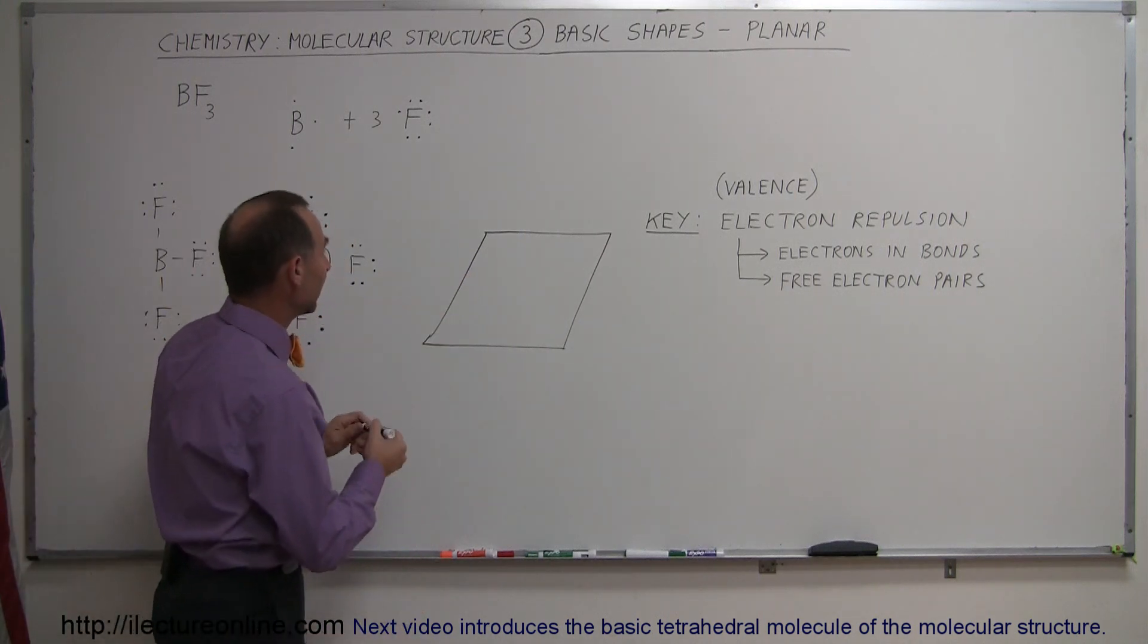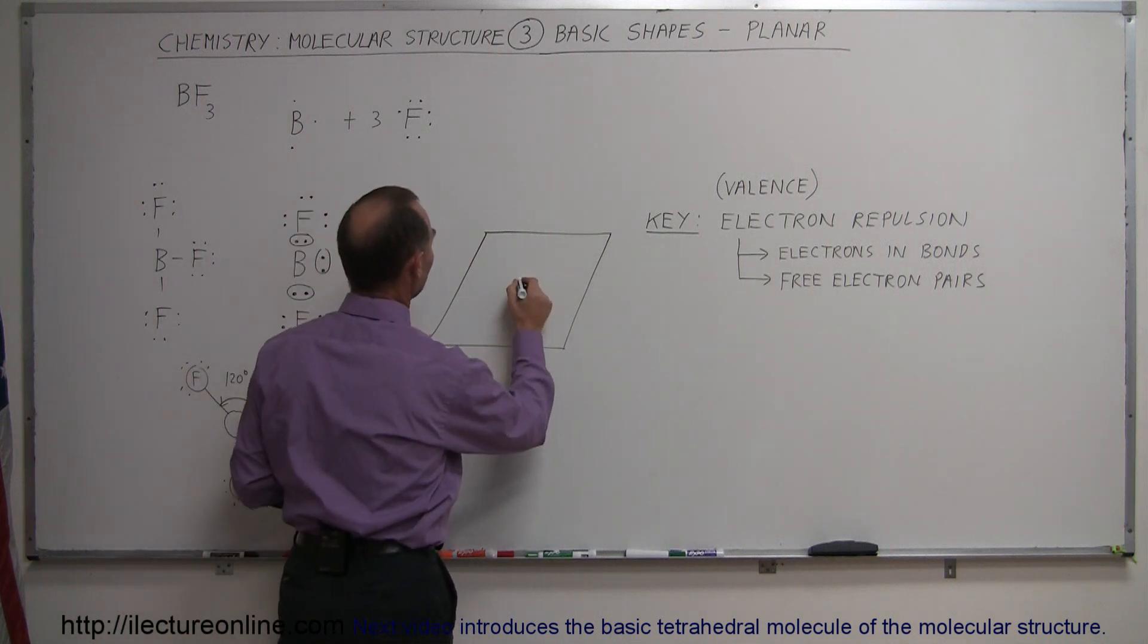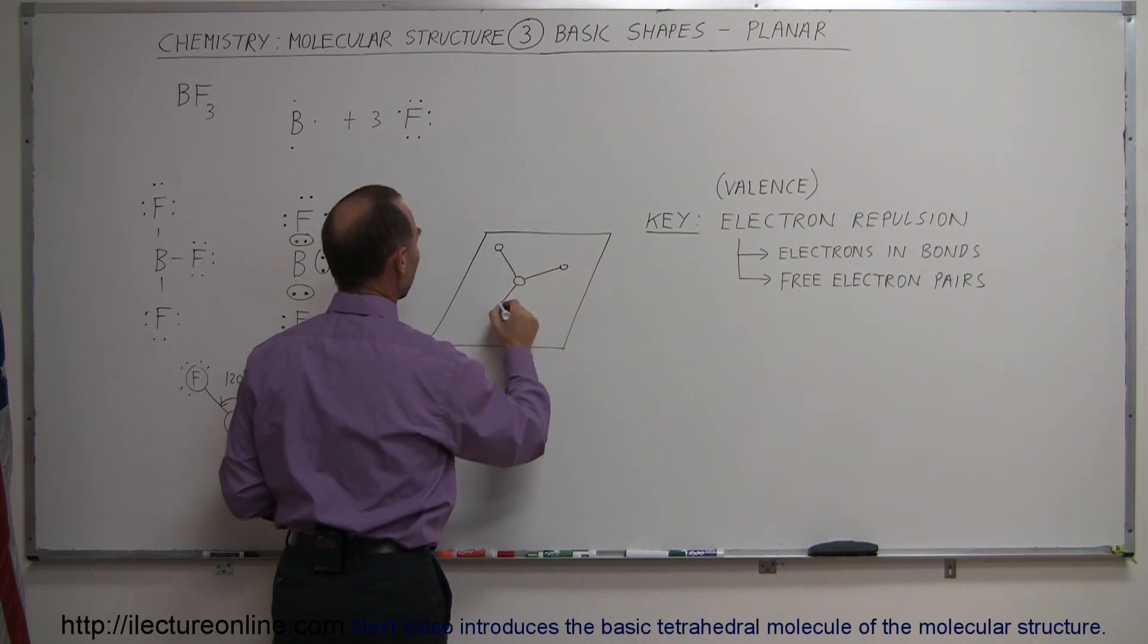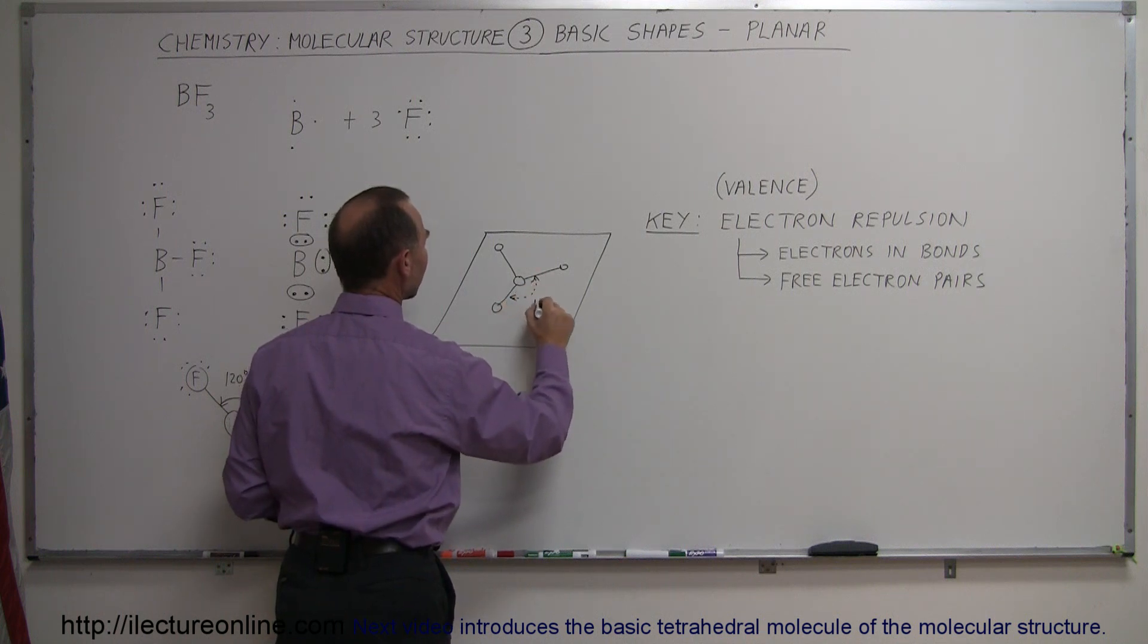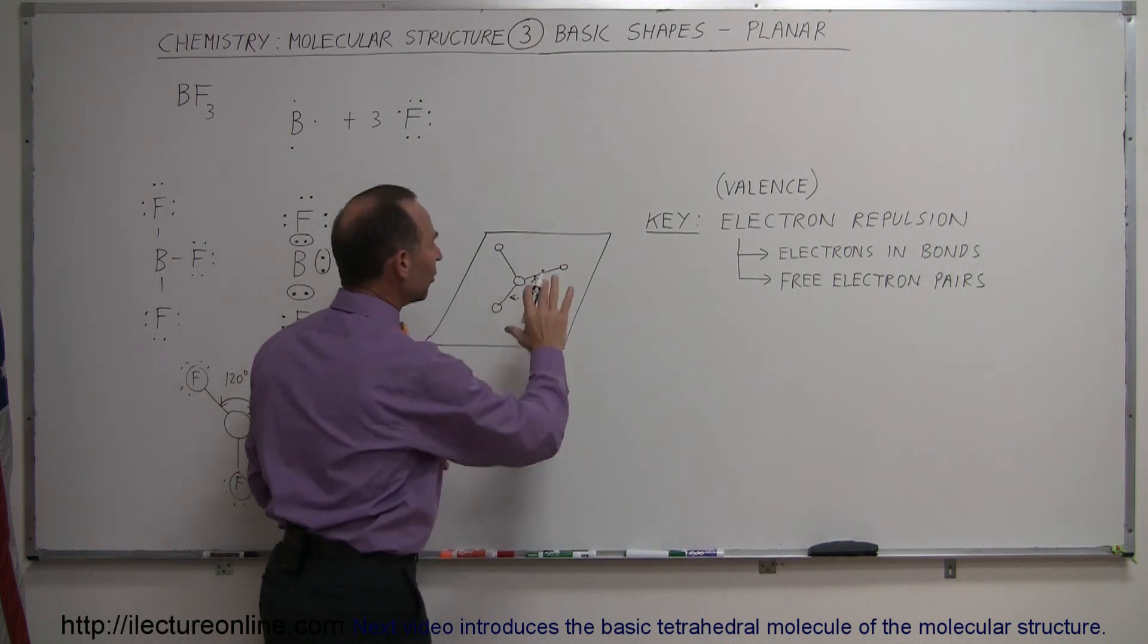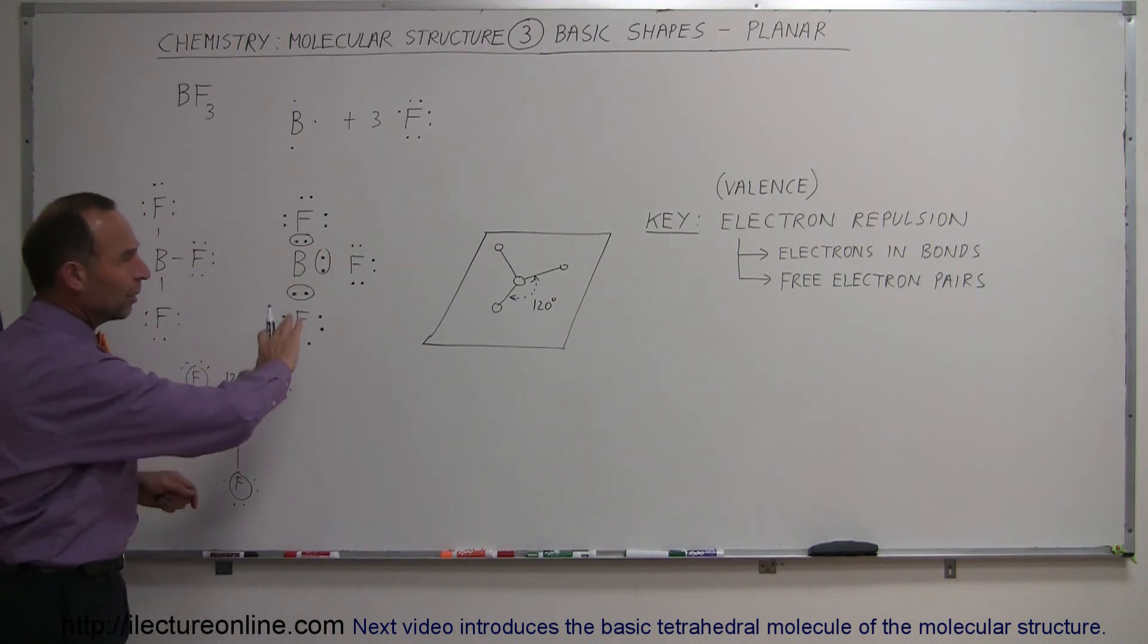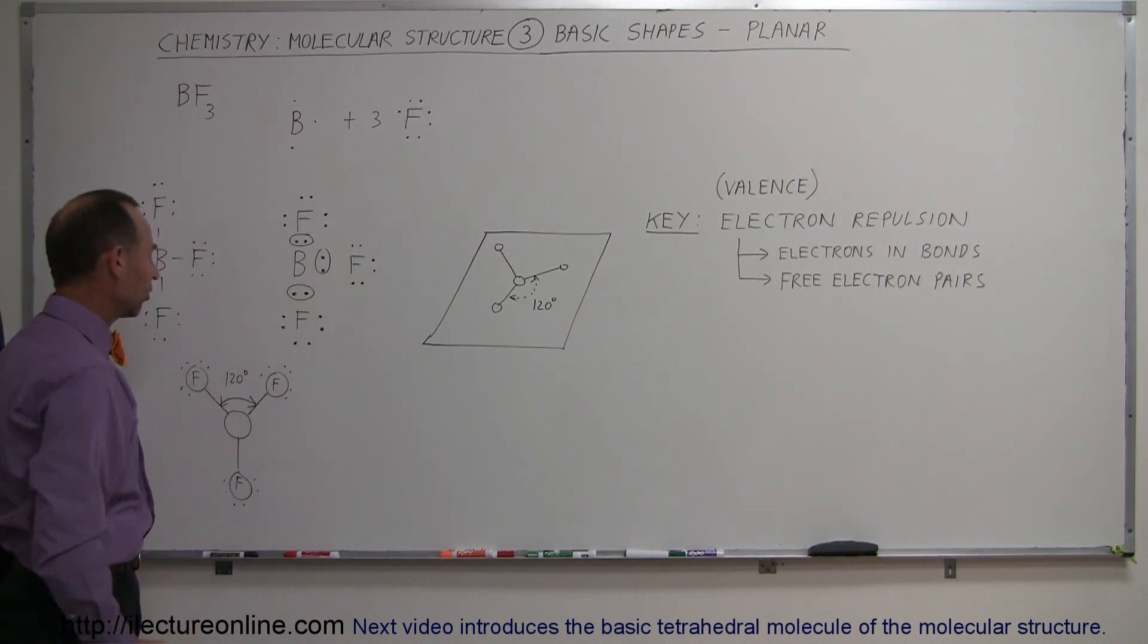Now if you're going to draw that on a sheet like this, you say okay I'll draw the boron in the center, you can draw an atom this direction, an atom this direction, and an atom this direction, and notice that the angle between any two would always have to be 120 degrees. So that's kind of a visualization of what it would look like, everything in the same plane structure like that.